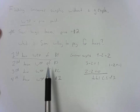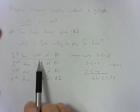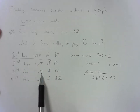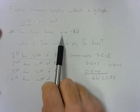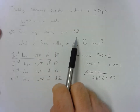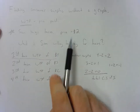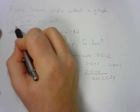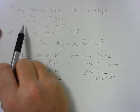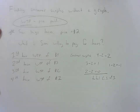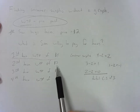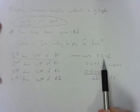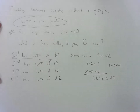Most questions will give you the willingness to pay for different quantities of a good or service and the market price. So to recap: calculating consumer surplus without a graph comes down to willingness to pay minus price paid. Those are the two key pieces of information. After that, it's just plug and chug — take your willingness to pay, take your price paid, add up those values, and you're done.